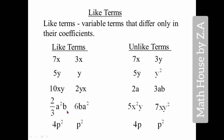For x²y and xy², x has power 2 and y has power 1 in the first term, while x has power 1 and y has power 2 in the second — both are different, so they are unlike terms. Finally, 4p² and p² are obviously the same variable with the same exponent, so they are like terms. But 4p and p² differ by their exponent, so they are unlike terms. Hope you now understand clearly about like and unlike terms.